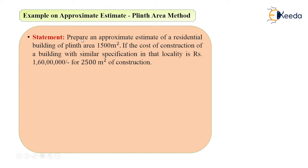The problem statement is: prepare an approximate estimate of a residential building of plinth area 1500 meter square. The proposed structure has a plinth area of 1500 meter square, and the cost of construction of a building with similar specifications in that locality is 1 crore 60 lakh for 2500 meter square of construction.